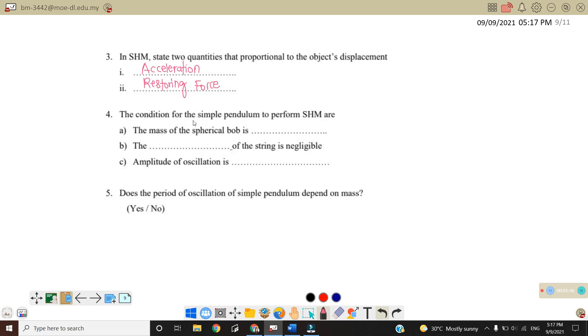Number four, the conditions of the simple pendulum to perform simple harmonic motion are: Number one, the mass of the spherical bob is a point mass. Number two, the mass of the string is negligible. Number three, amplitude of the oscillation is small, and usually the angle theta here that we use is smaller than 10 degrees.